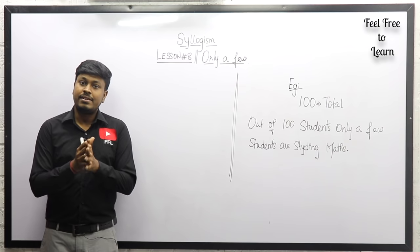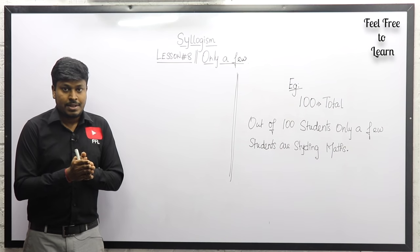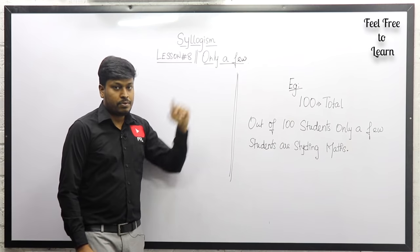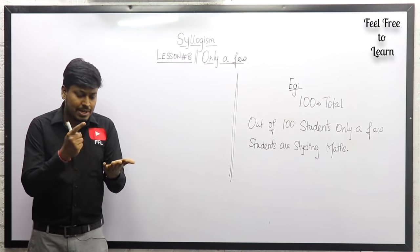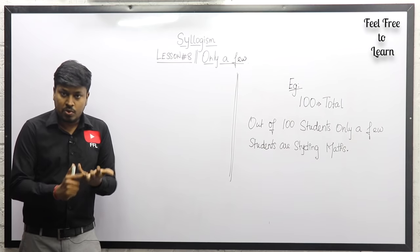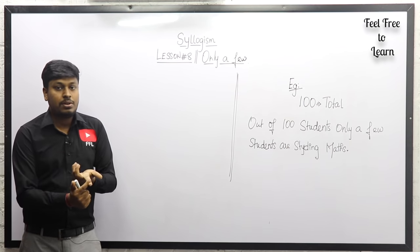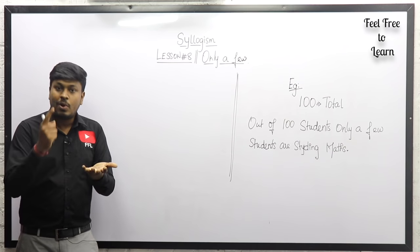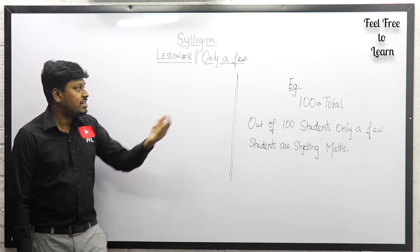Thanks for being here on my YouTube channel. This is lesson number eight on the topic of syllogism. We are going to solve some questions based on the 'only a few' conclusion. We have already solved seven different lessons covering 'some and all,' 'no,' 'possibility,' 'some not,' and 'complementary pair' conclusions.